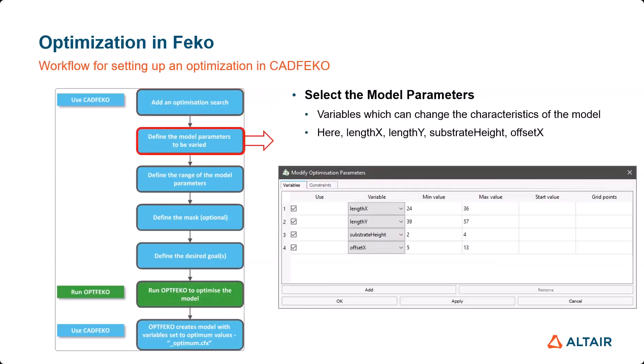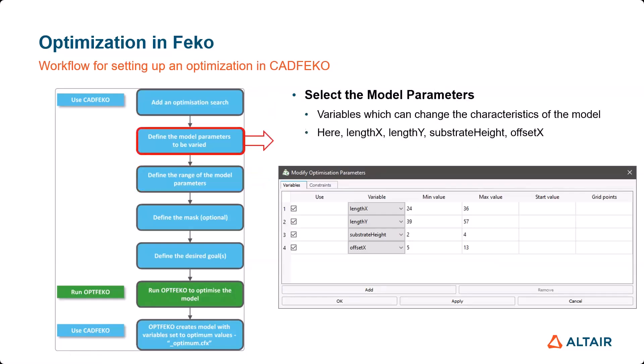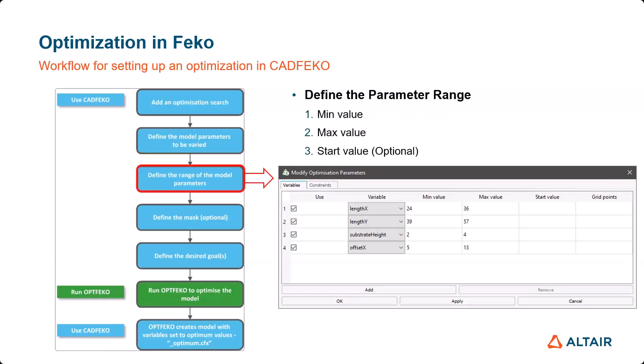The second step is to select the model parameter. The model parameter is a variable which can change the characteristic of your model. For this example, I use length X, length Y, substrate height, and offset X as the model parameters. The next step is to define the parameter range, which includes the minimum value of the parameter, maximum value, and optionally we can also give an initial value.